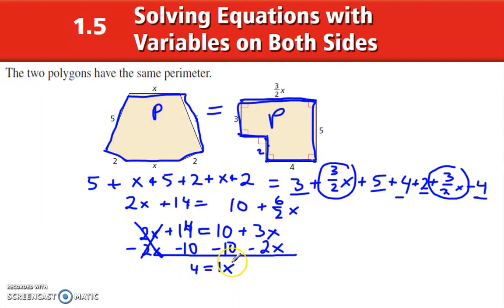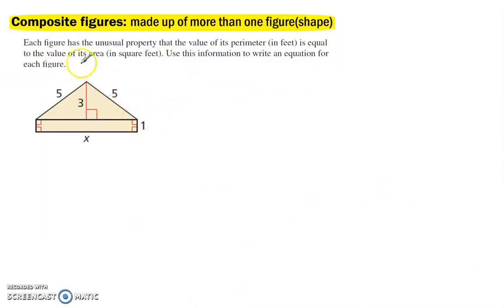I could find the perimeter by plugging that back in up here. 4 times 2 is 8, plus 14 is 22, if they are asking for the perimeter. Composite figures are made up of more than one figure or shape. So here we have a triangle and a rectangle.